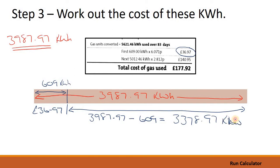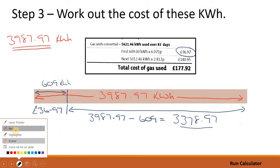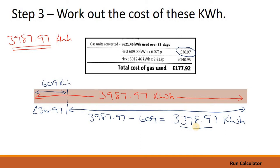3,378.97 kilowatt hours that we still have to pay for. We've got to work out the cost of this. We know the cost of the first 609. We've got to work out the cost of this. 3,378.97 kilowatt hours. So we've got to work out the cost of these 3,378.97 kilowatt hours.